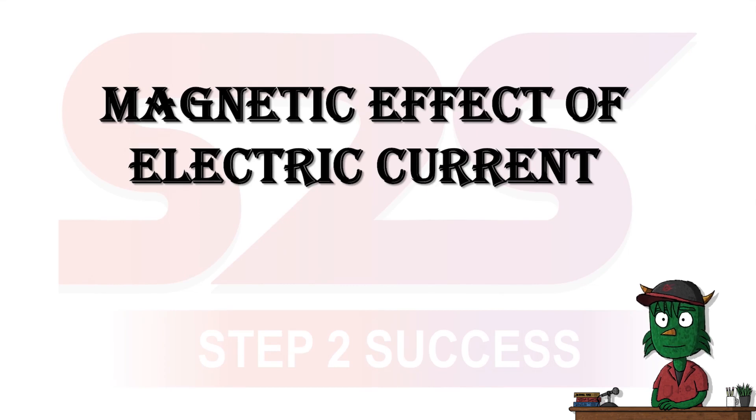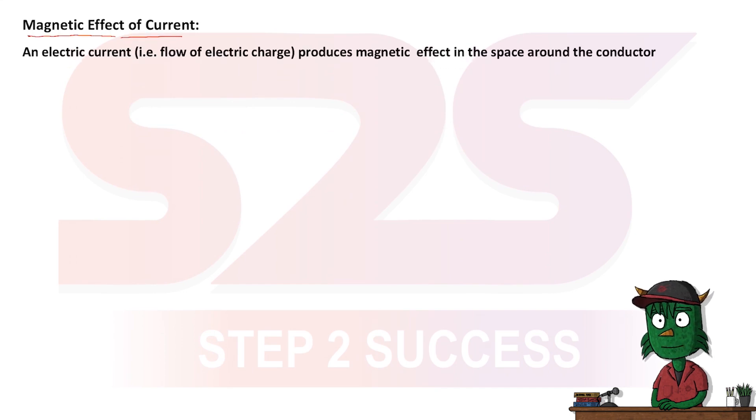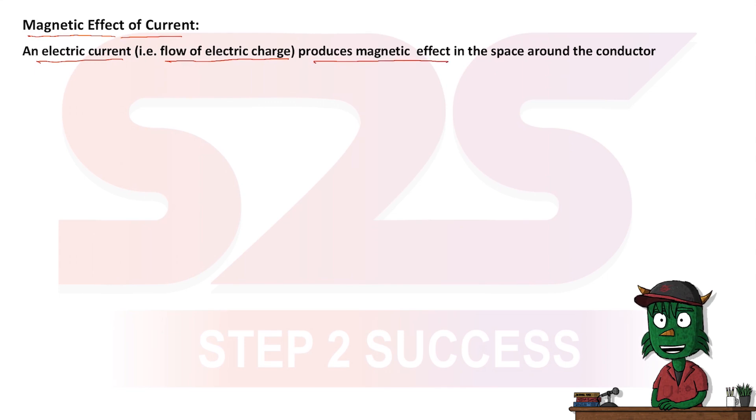In today's module we study about magnetic effect of electric current. Magnetic effect of current means when an electric current, that is the flow of electric charge, produces magnetic effect in the space around the conductor.